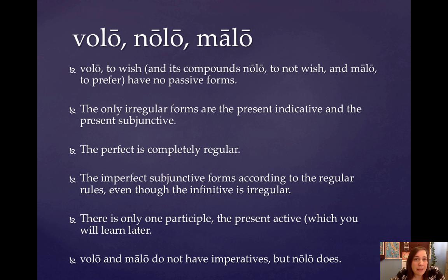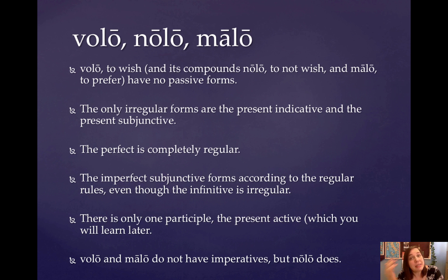It's going to be volebam, meaning 'I was wishing,' and volebam, meaning 'I will wish.' The imperfect subjunctive forms according to the rule you know, which is the second principal part — the present active infinitive — plus the endings. So even though the infinitive looks a little bit weird, it still is the basis for the imperfect subjunctive.